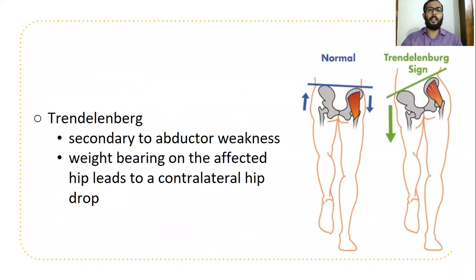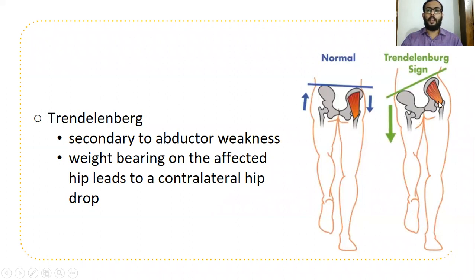Coming to Trendelenburg sign, which is affected in abductor weakness. Whenever the patient raises the left leg, we can see a hip drop on the weight-bearing side. A positive Trendelenburg sign means there is a hip drop on the contralateral side of the weight-bearing joint. Here in this particular patient, the right side hip abductor is weak. Trendelenburg sign is positive in hip abductor weakness.